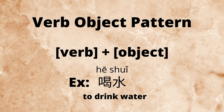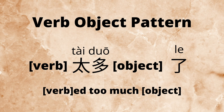For example, 喝水 means to drink water. 喝 is a verb, and 水 is a noun or object. Our pattern takes that verb and object, puts 太多 in the middle of them, and a 了 at the end.